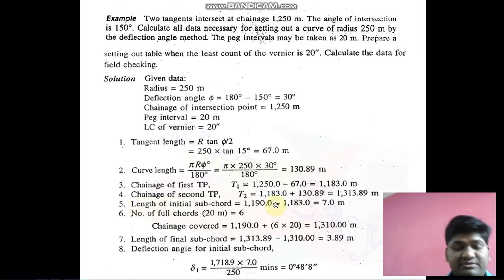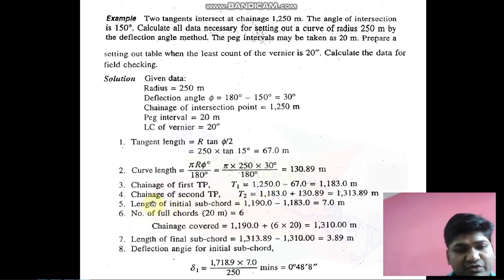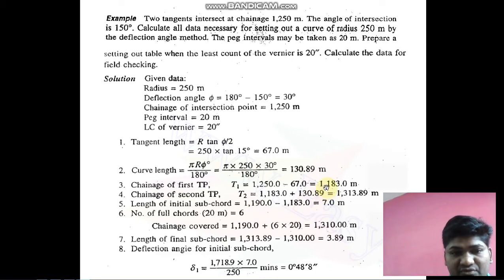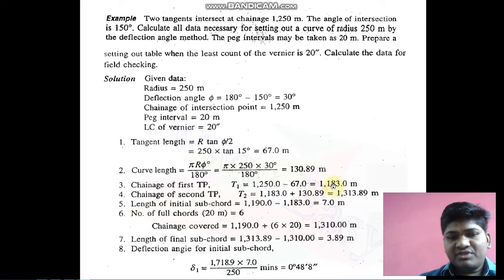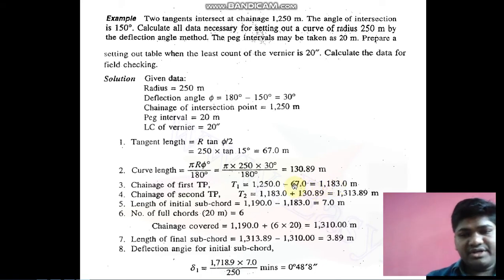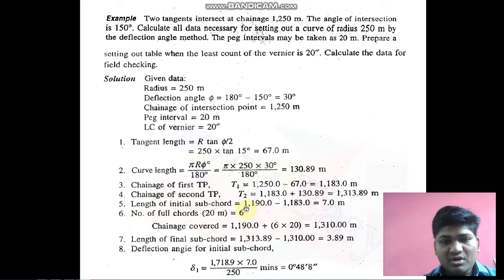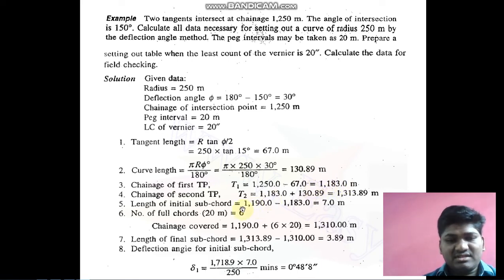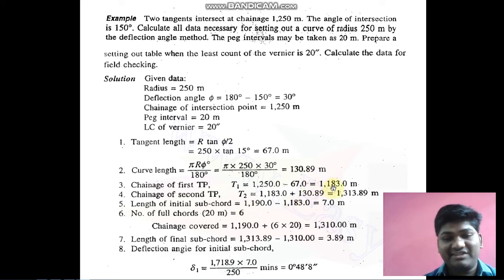The very important bit is the length of the initial sub-chord. I found that many students are not getting this part, so I'm going to explain how to find the length of the initial sub-chord. The formula is: length of initial sub-chord = round-up chainage of T1 minus exact chainage of T1. The chainage of T1 is 1183, so rounding up gives 1190. Therefore, 1190 minus 1183 equals 7 meters.